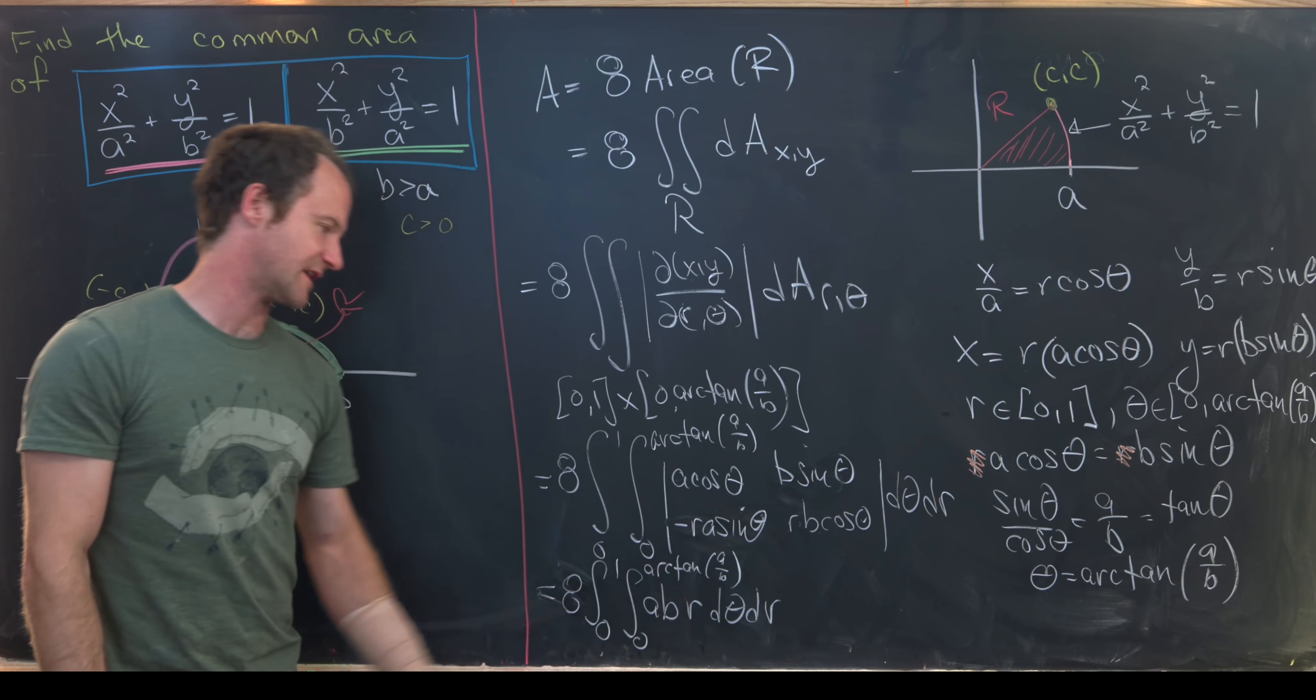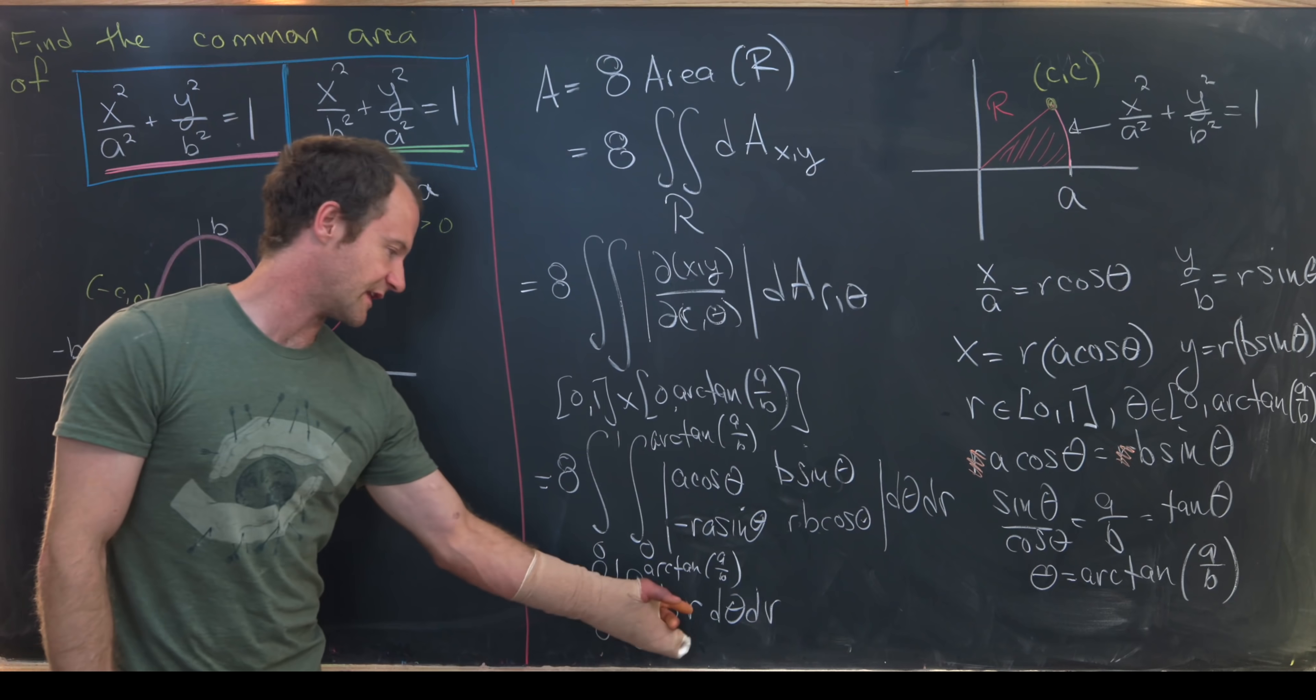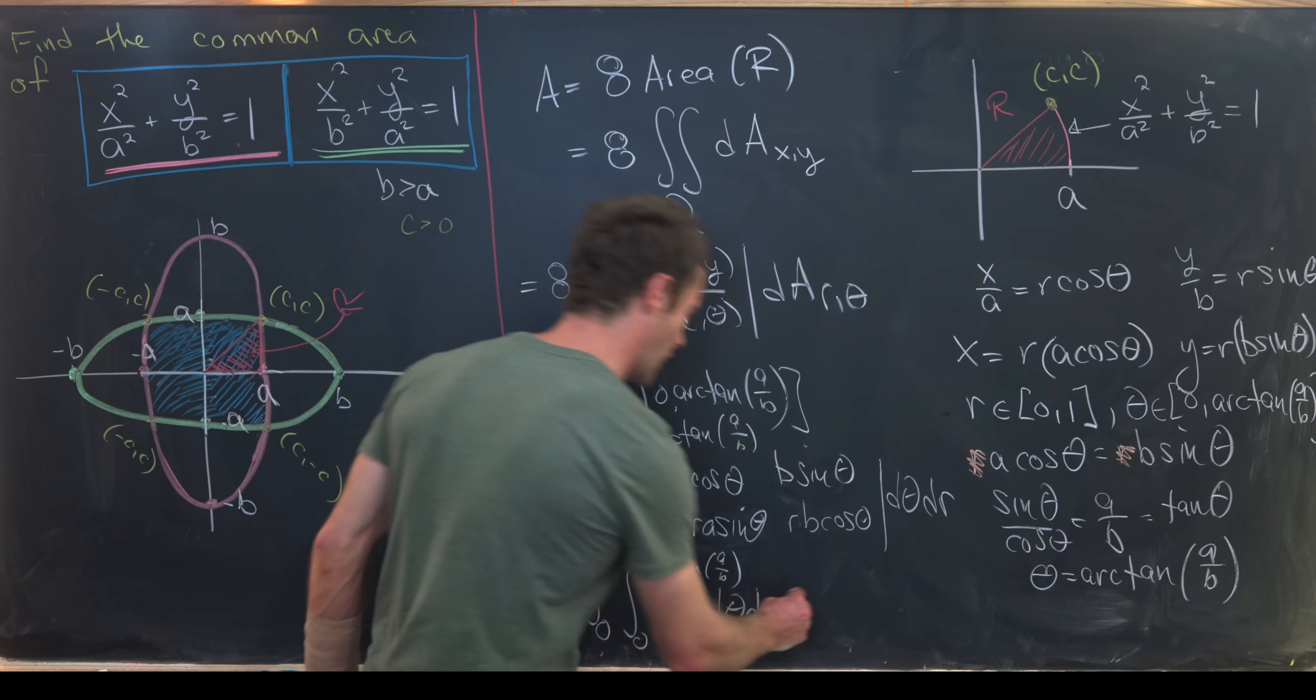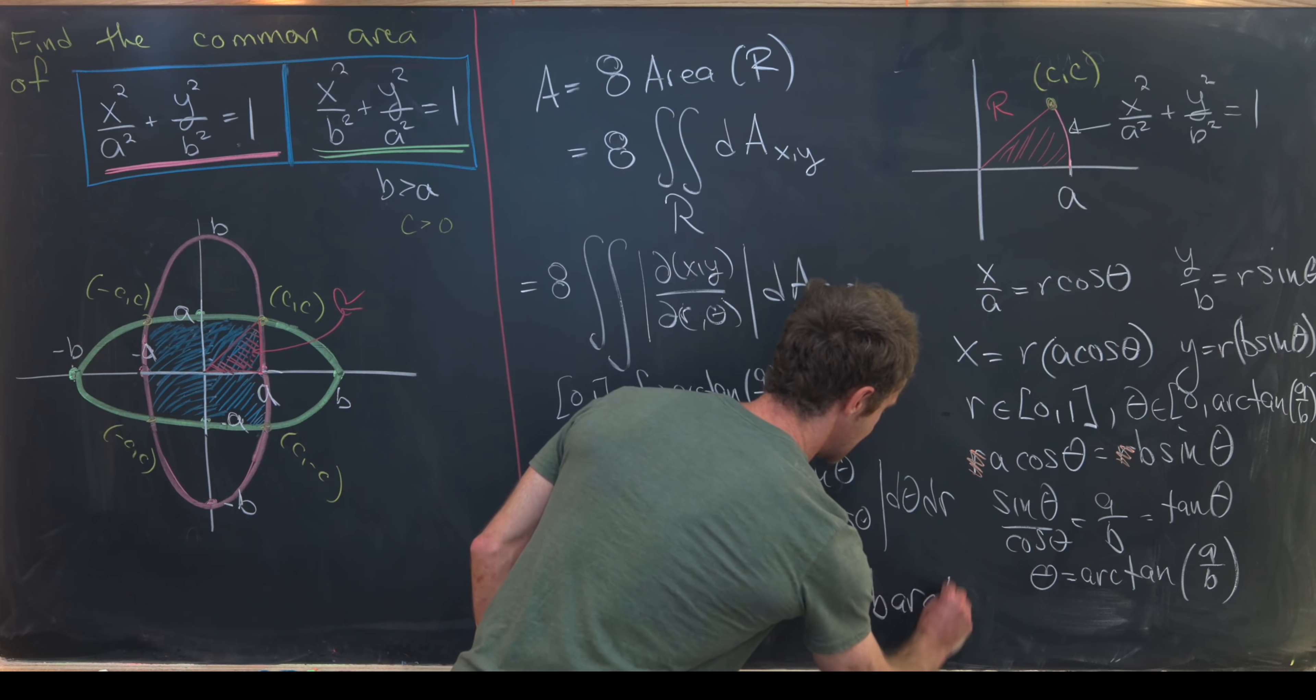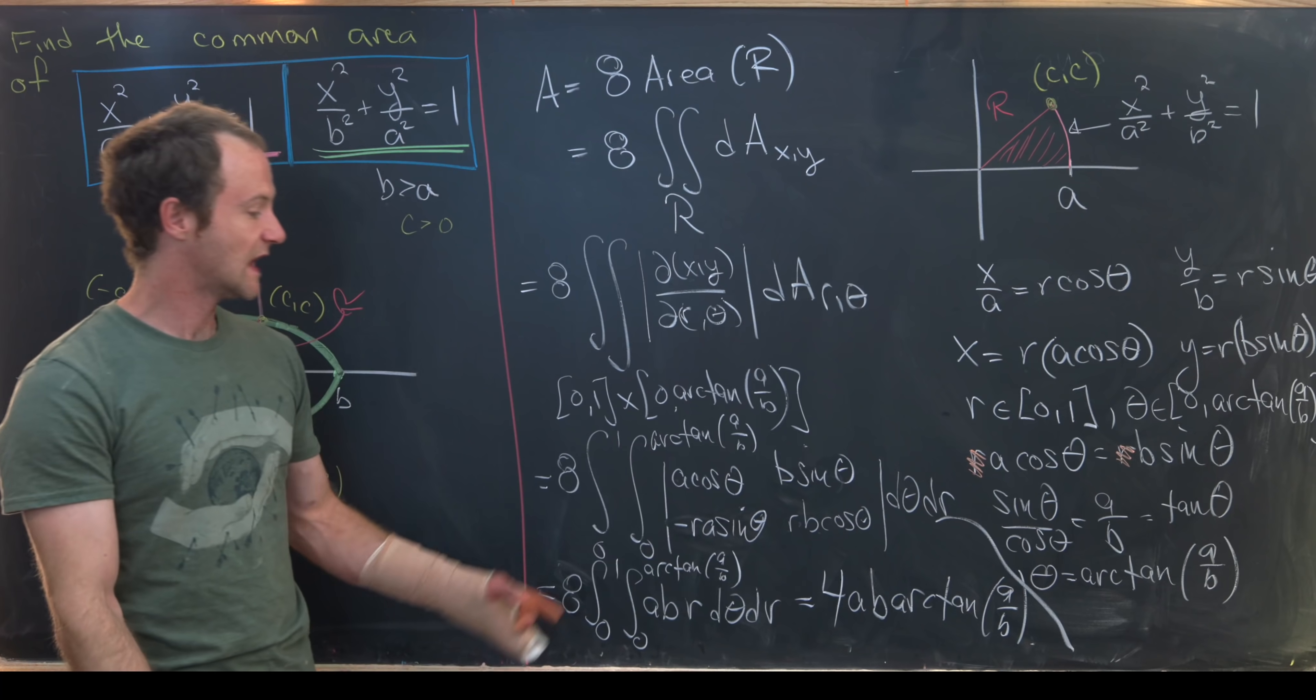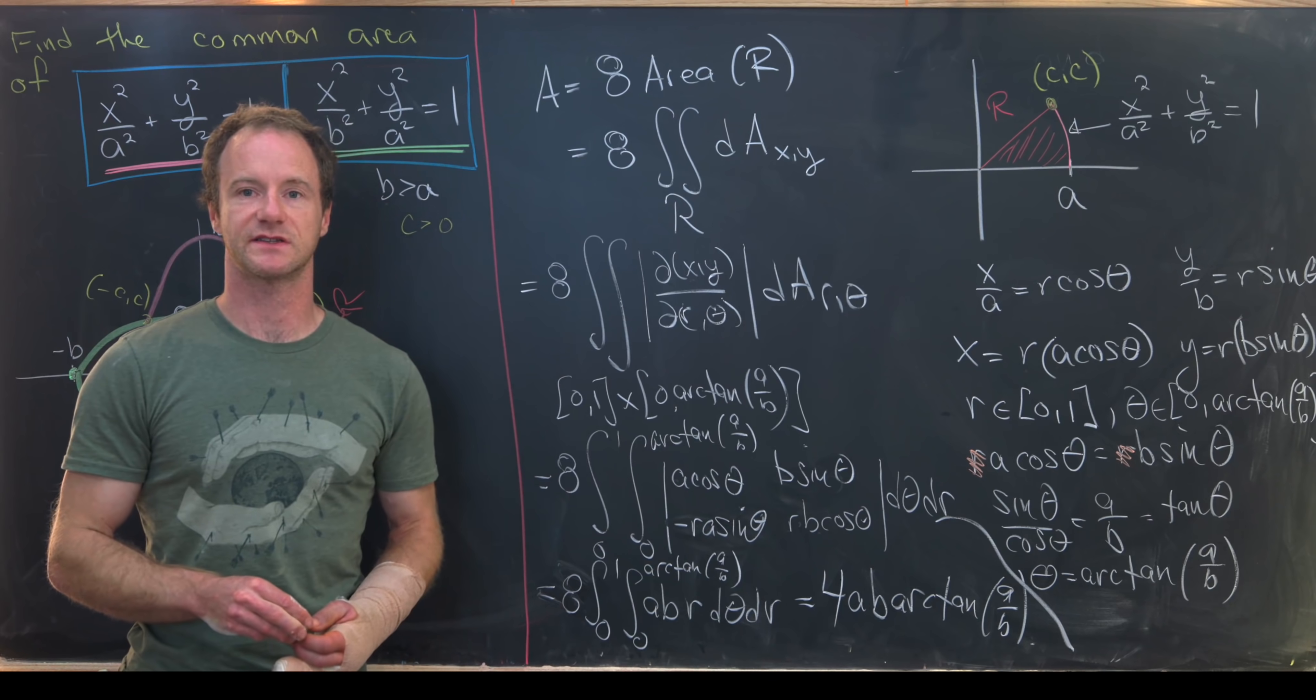Integrating the theta part will give us a factor of arc tangent of a over b. And integrating the r part will give us r squared over 2, which we need to evaluate at 1 and 0. In the end, we'll have 4 a b times arc tan of a over b. And that is our common area between these two ellipses. And that's a good place to stop.